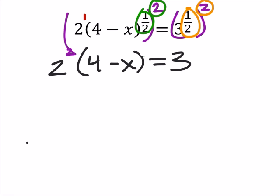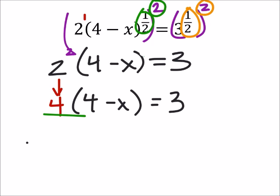So from here, let's evaluate two squared, which is four, and this is multiplied by four minus x. It should equal three. You could distribute that four, but I don't want to do that much work, so I'm just going to divide both sides by four. The fours cancel out right there, and then I'm left with four minus x.